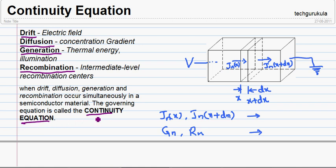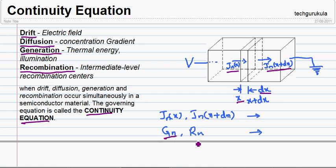For deriving the continuity equation for electrons, consider an infinitesimal slice with thickness dx at x as shown in the figure. Assume jn(x) is the current density flowing into the slice at x, and jn(x+dx) is the current density of electrons flowing out of the slice at x+dx. The generation rate of electrons in the slice is gn, and the recombination rate of electrons with holes is rn.